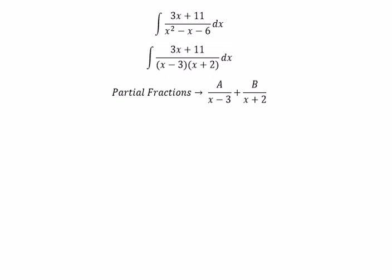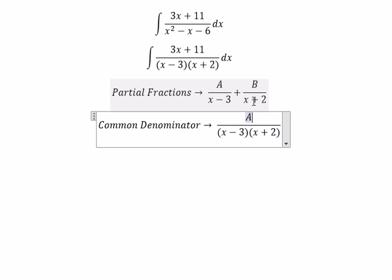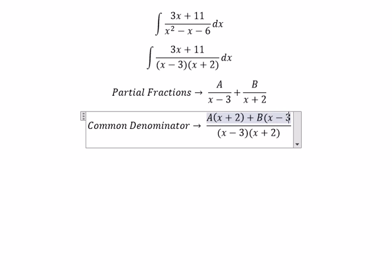Later that, we do common denominator. So we have this one. A multiplied with x plus 2, B multiplied with x minus 3.